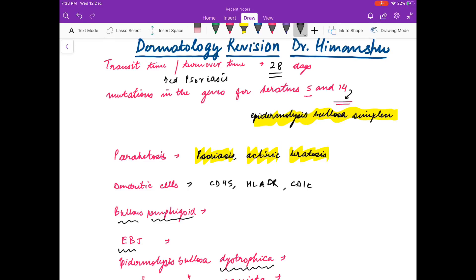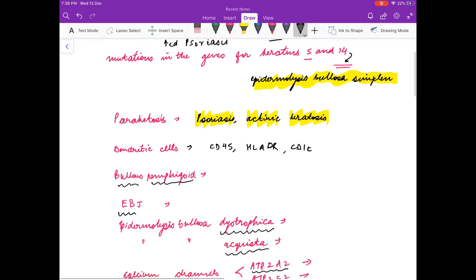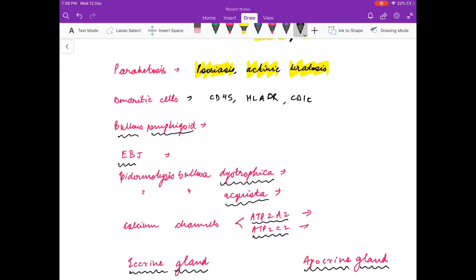The normal transit time for skin is 28 days. It is increased in psoriasis.